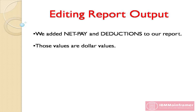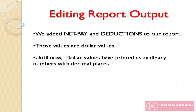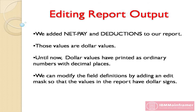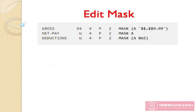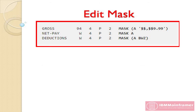Those values are dollar values. Until now, dollar values have printed as ordinary numbers with decimal places. We can modify the field definitions by adding an edit mask so that the values in the report show dollar signs. An edit mask is a pattern of characters that specifies how numeric data should appear in the report — it is similar to the edited picture clause in COBOL. For example, we have added edit masks to the three currency fields: gross, net pay, and deductions, so that they print with dollar signs.